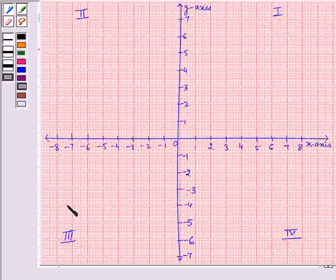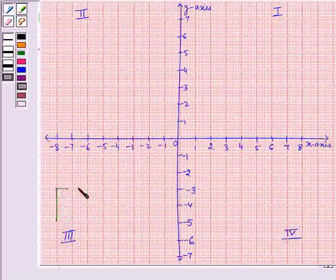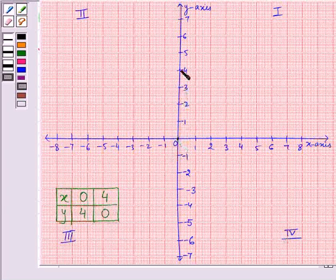Now the points which we need to mark are for x equals 0, y equals 4, and for y equals 0, x equals 4. Now these points, when x is 0, y is 4. So the point will be here and we will be naming this point as 0, 4.